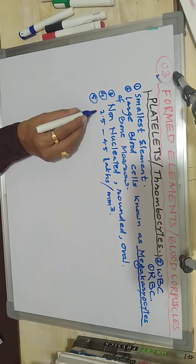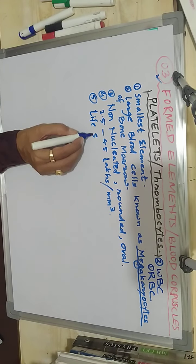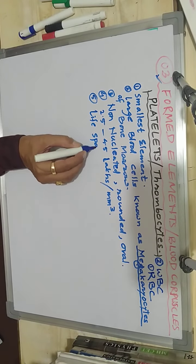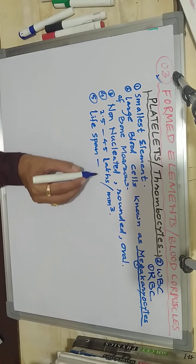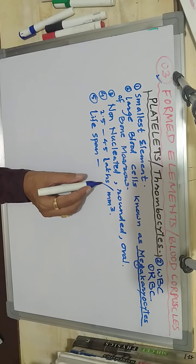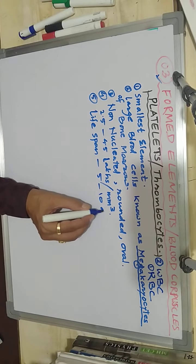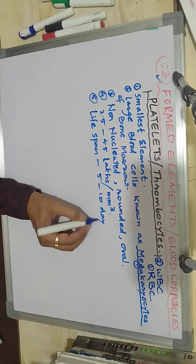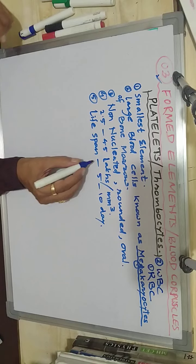When you observe the lifespan of platelets or thrombocytes, they range from 5 to 10 days — hardly 5 to 10 days.